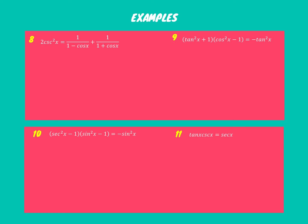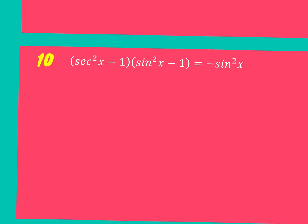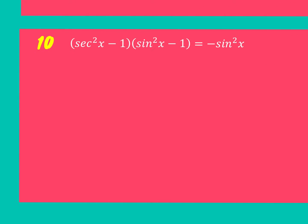All right, so we did nine, but I said I would go back to ten. Let's see how well we do. So what would you do for ten?